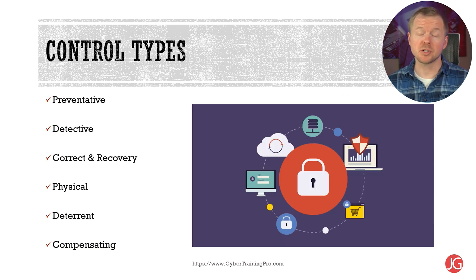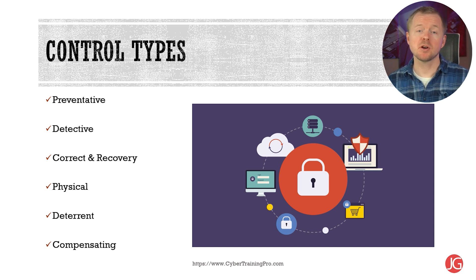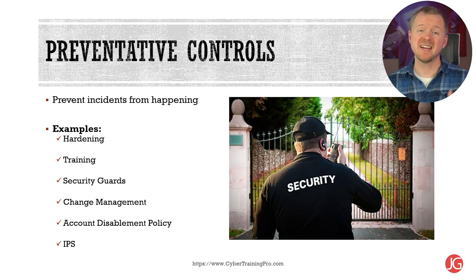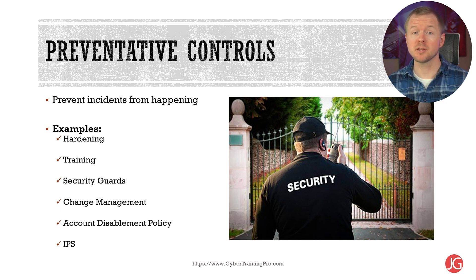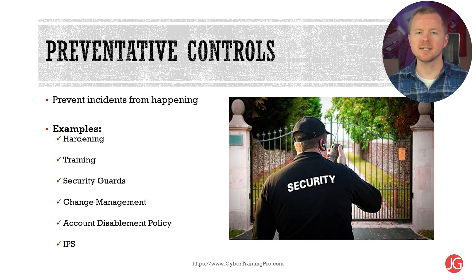Controls are also broken down into control types, which describe the purpose and what they ultimately accomplish. Keep in mind that a single control could fall into multiple categories. Preventative controls try to prevent incidents from happening. Examples include hardening systems by applying secure configurations, user awareness training on social engineering, security guards who monitor their facility, change management to control changes, account disablement policy to disable user access when someone is terminated, and intrusion prevention systems to block malicious network traffic.